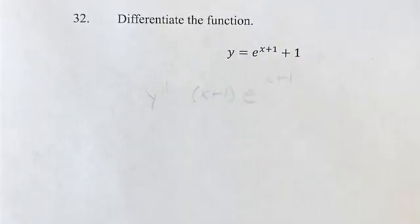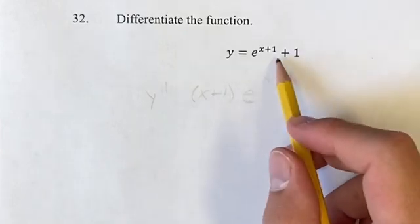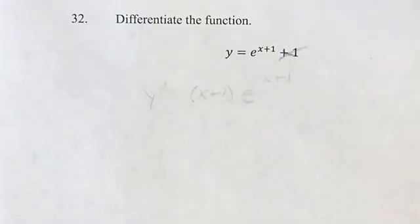This is just a constant, its derivative is going to be 0, so we can just ignore that. We just have a plus 0 at the end.